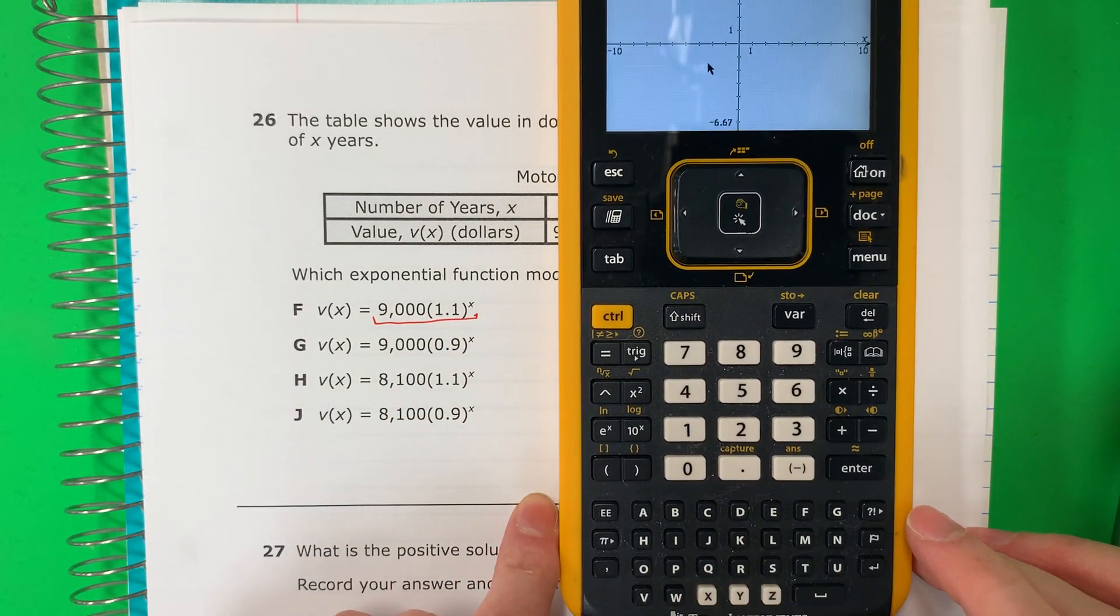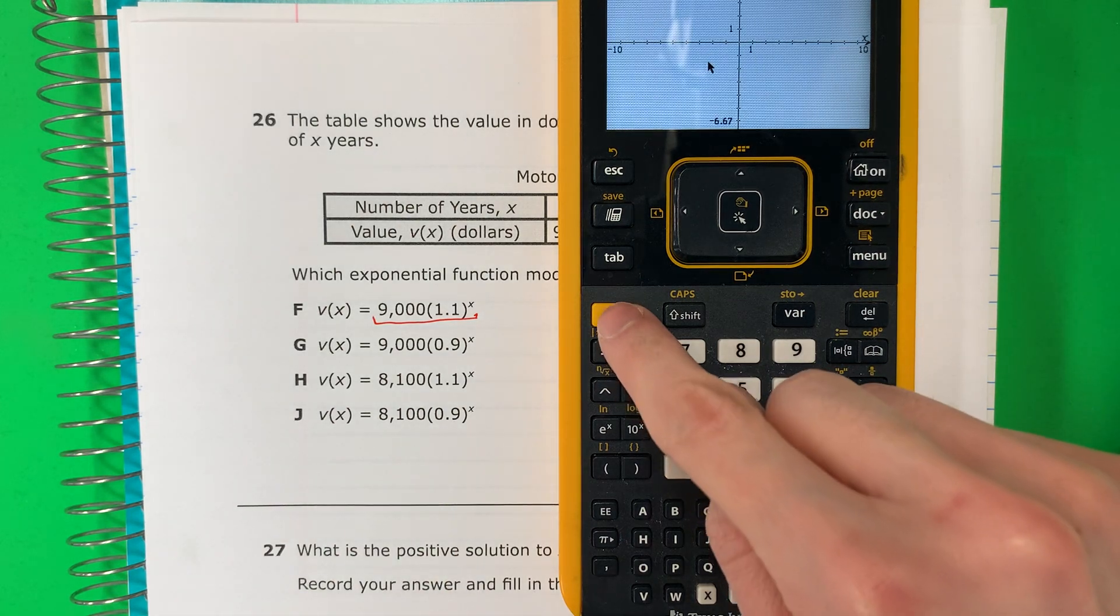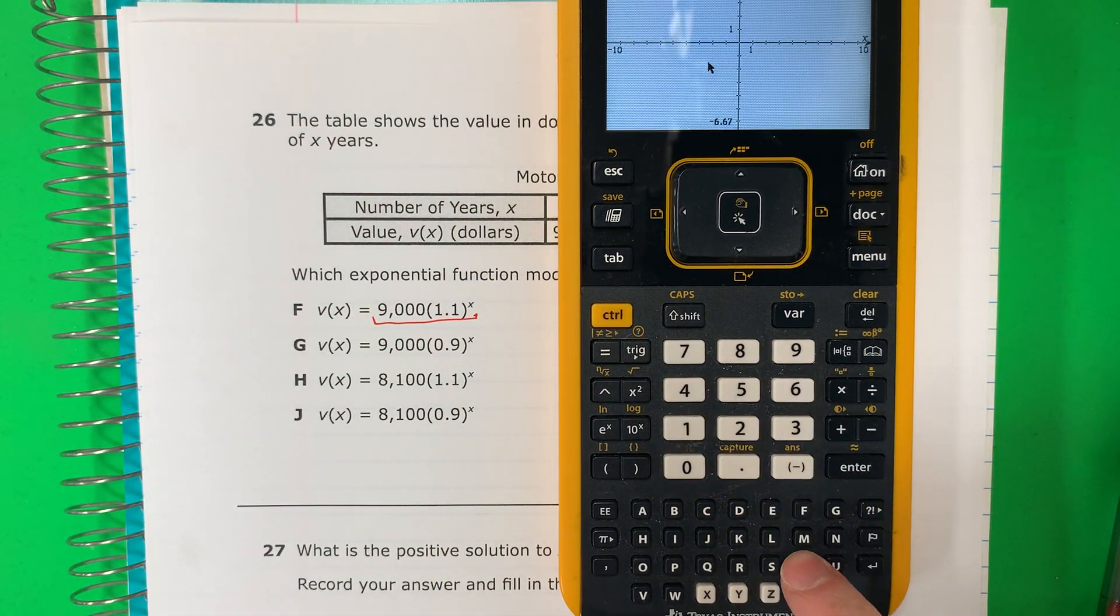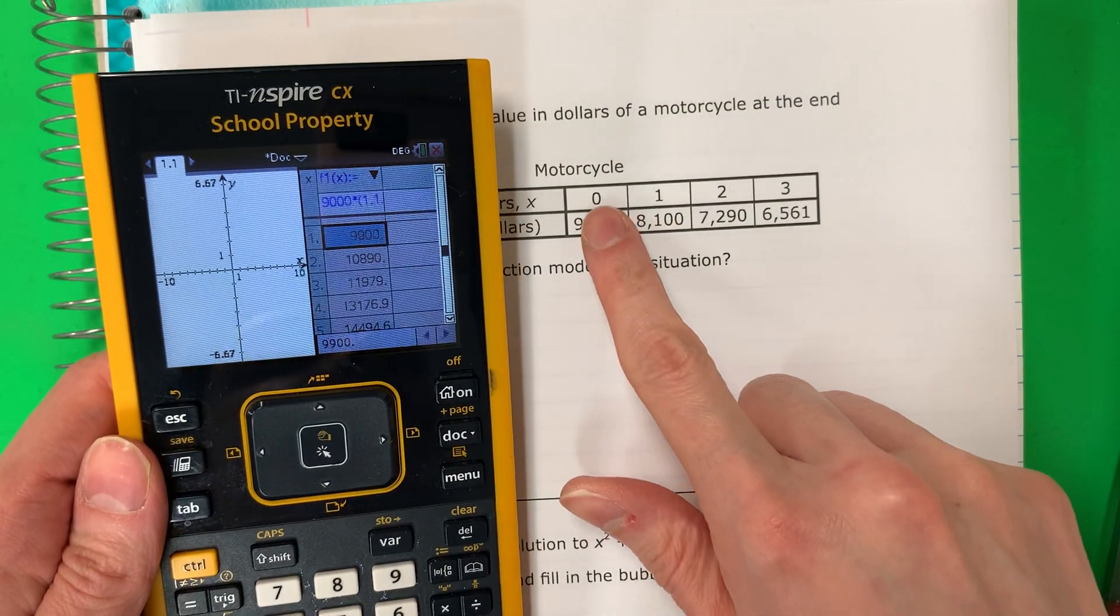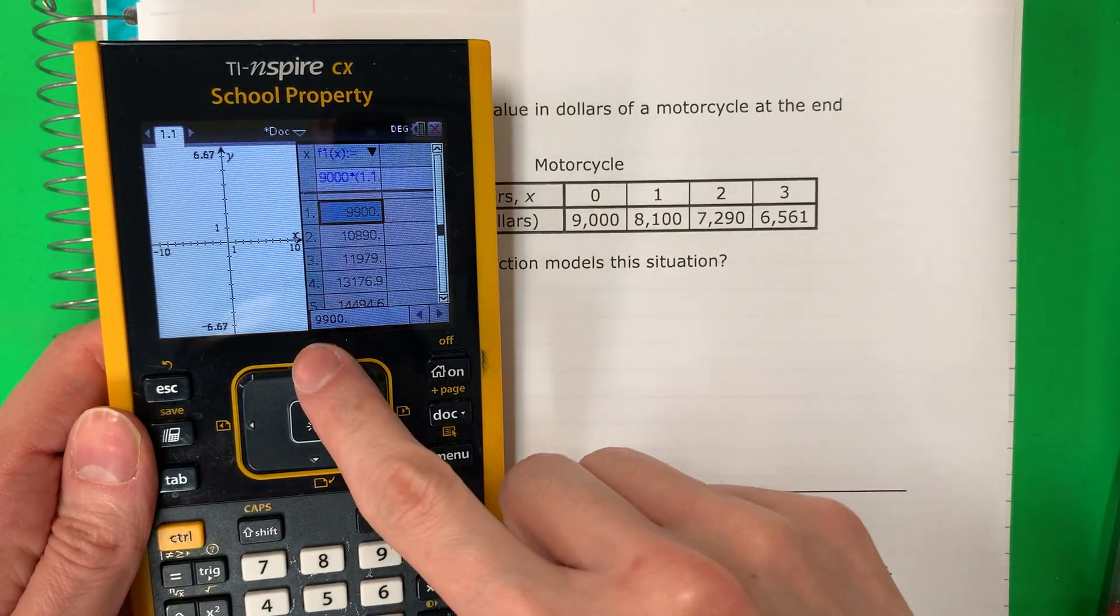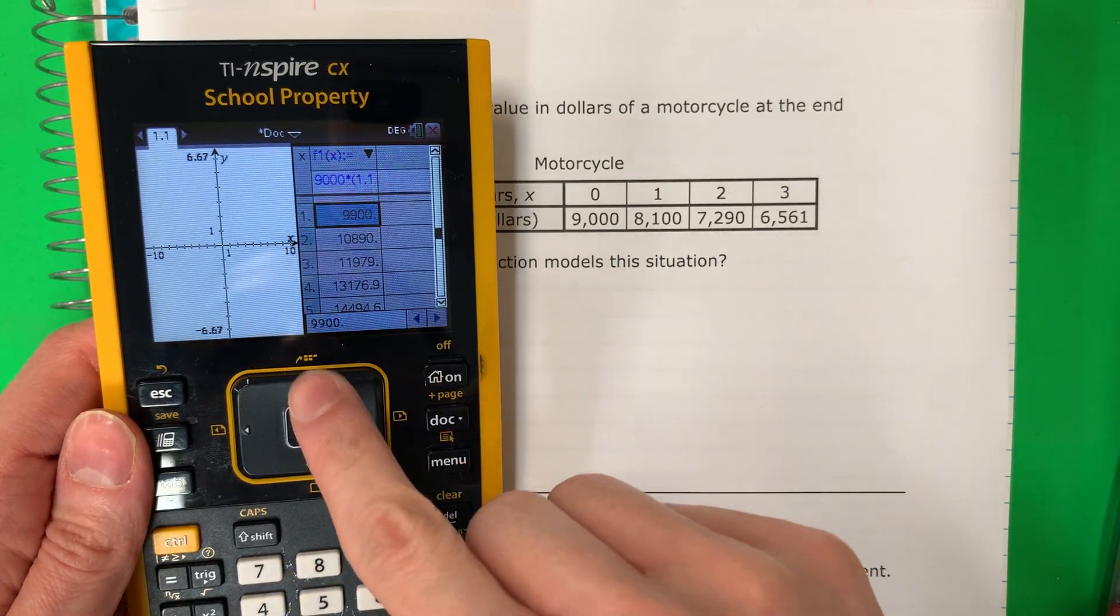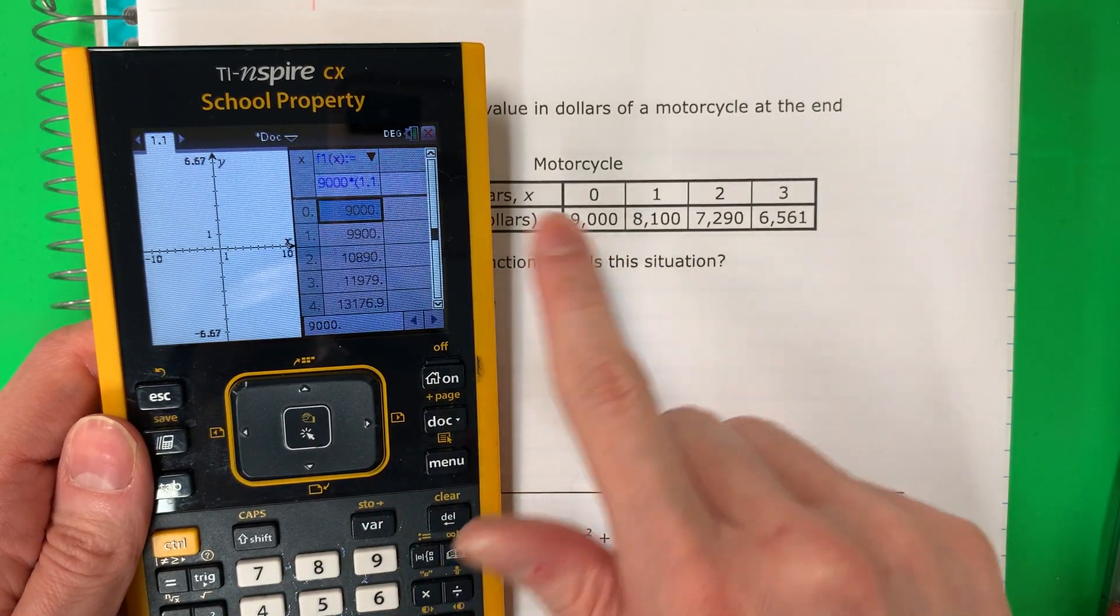Now to make a table. Para crear una tabla. You're going to do control T. There's your table. So let's go ahead and take a look. So we're going to need to go to X zero. So go up. Because this is one. Es uno. I need to go up. Here's zero.